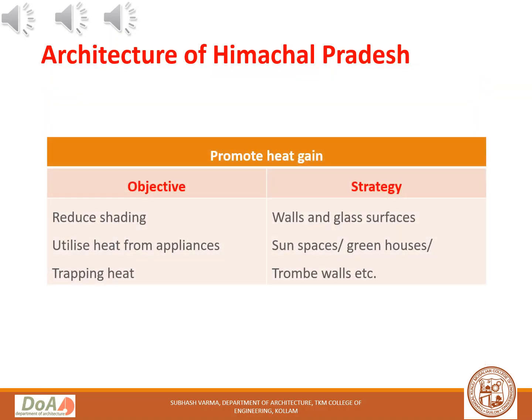The second aspect to maintain thermal comfort is to promote heat gain. The objectives of promoting heat gain are to reduce shading, utilize heat from appliances, and trap heat. The strategies used are walls and glass surfaces, sun spaces, greenhouses, and Trombe walls.